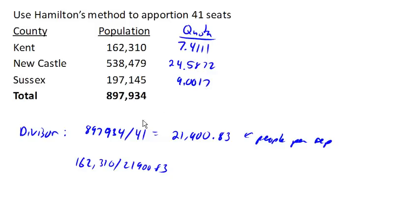The problem, of course, is that it's hard to have 0.4111 representatives. That is what makes apportioning challenging — we can only apportion whole numbers to each of the counties. So our initial allocation in Hamilton's method says take each of these values and chop it down to the integer value — in other words, drop the decimals.